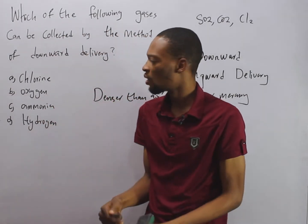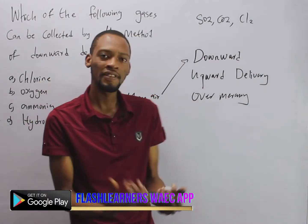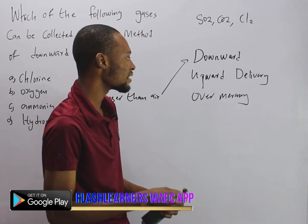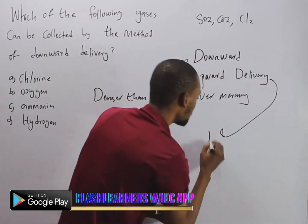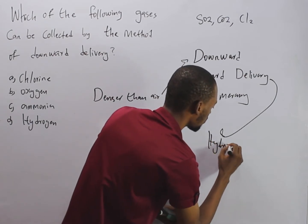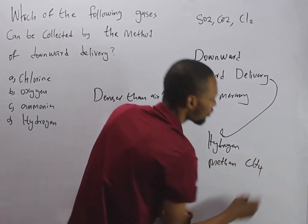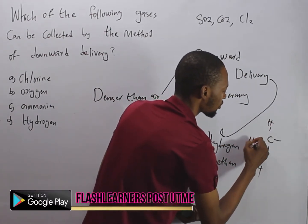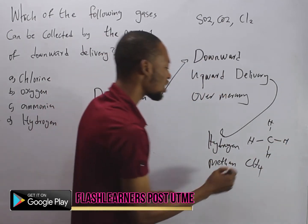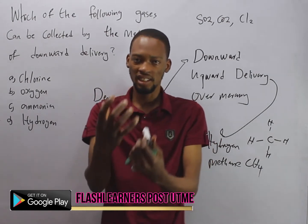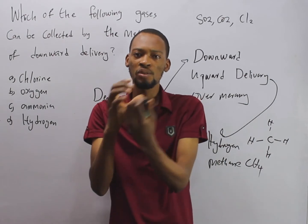These gases are collected by downward delivery. When a gas is less dense than air — meaning air is heavier or denser — those gases are collected by upward delivery. Examples are hydrogen and methane (CH4, one carbon and four hydrogens). These gases are lighter than air and are collected by upward delivery.